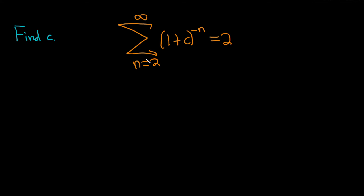In this problem we have an infinite sum and we're told it's equal to 2, so that means it converges. Whenever you have an infinite sum equal to a number, that means we have a convergent series, and we're asked to find c. Let's go ahead and work through it.